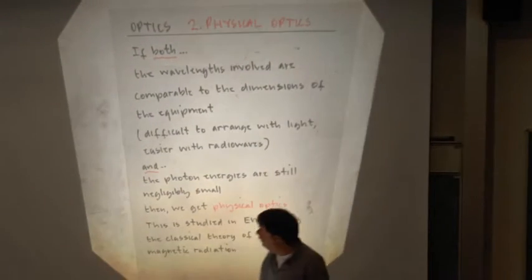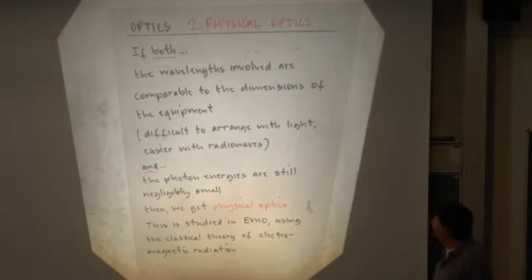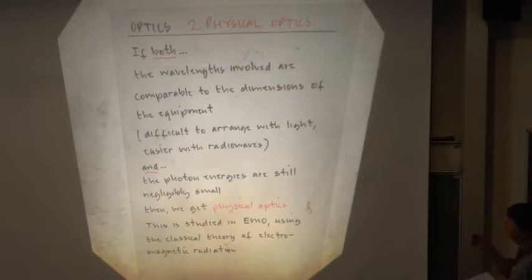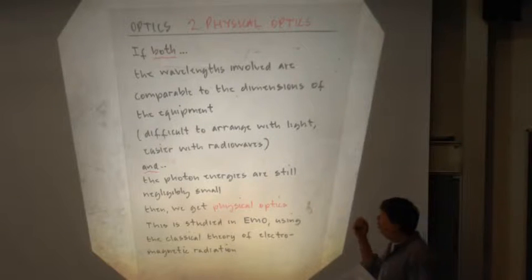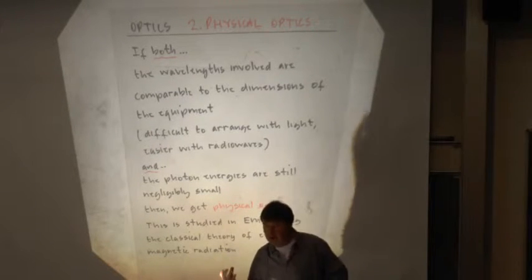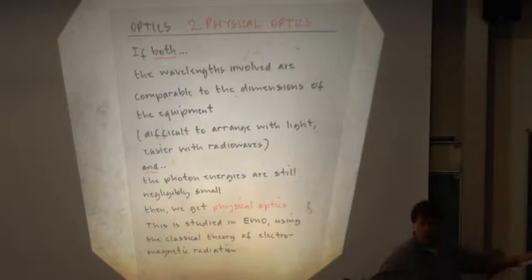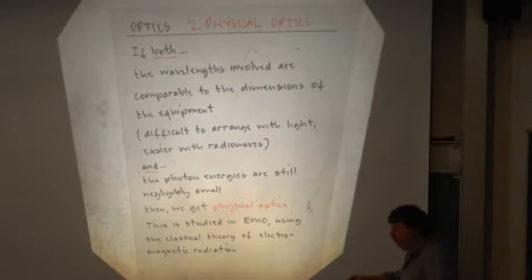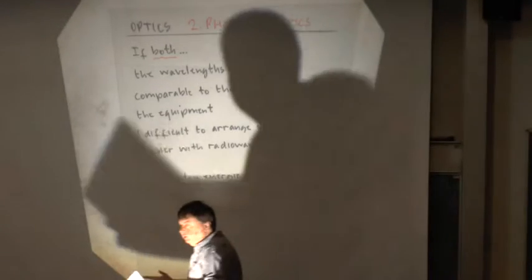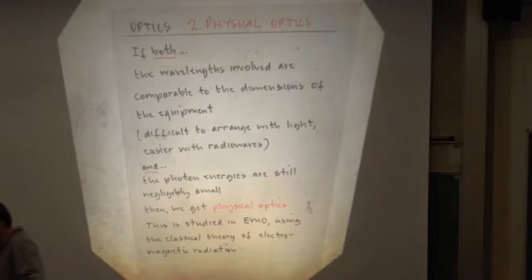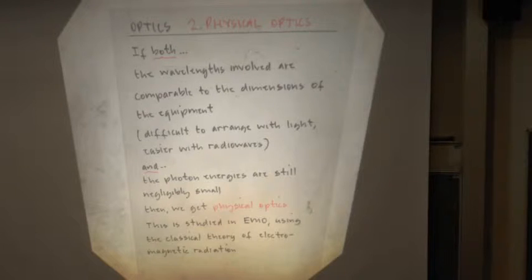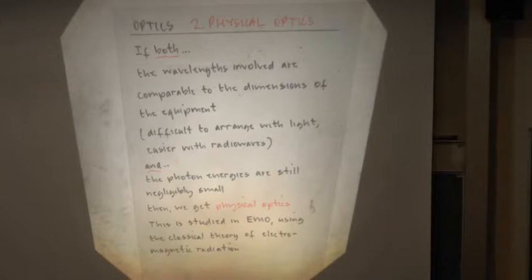What we're calling optics in this course is sometimes called physical optics. Here, the wavelengths involved are comparable to the dimensions. For example, if we've got two radio transmitters transmitting at 300 metres — lambda is 300 metres, a medium wave band on the radio — our frequency is of the order of a megahertz, preserving C equals f lambda, which is 3 times 10 to the 8 metres per second.